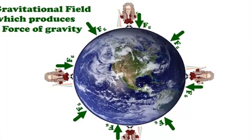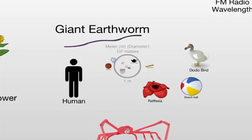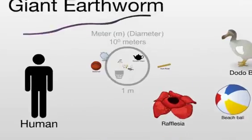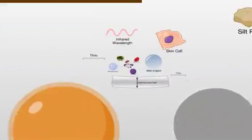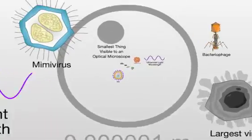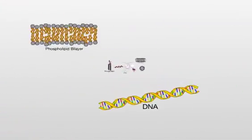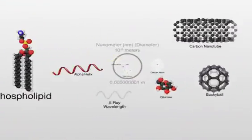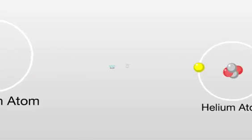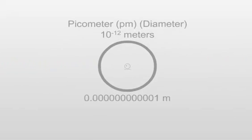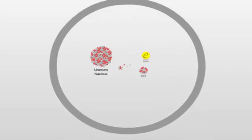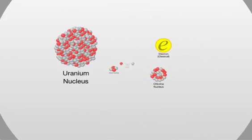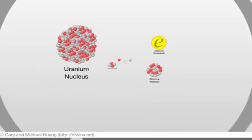Now I'm going to take us from the macro scale, from the human, all the way down to what we call the subatomic scale — past DNA, past phospholipids, past the alpha helix, all the way down to an electron, a positron, and things like that, down to the subatomic scale.